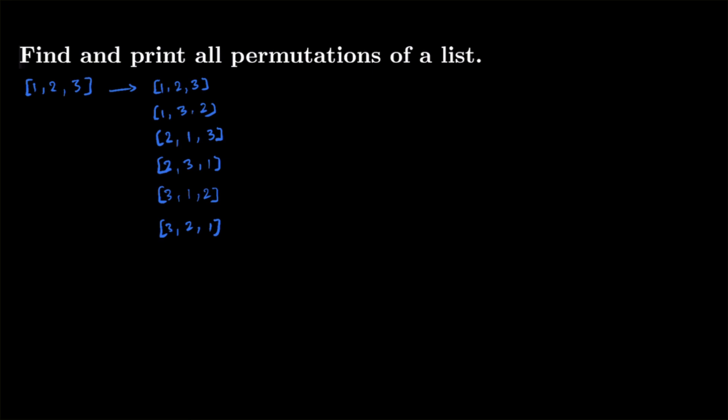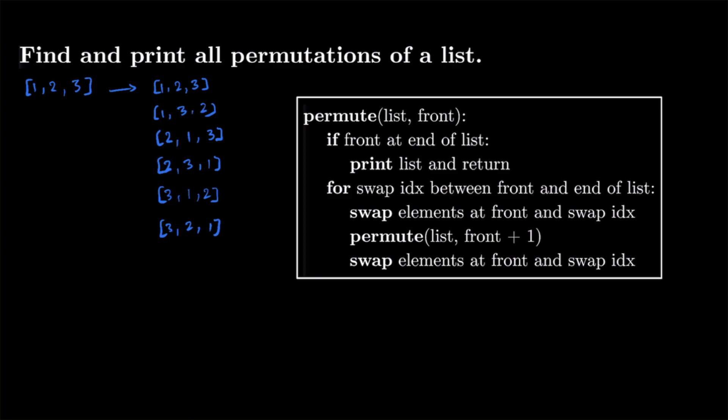This is actually a classic backtracking recursion problem. We can define a recursive function, perform a step, and then recurse again. After that recursion call, we backtrack — we undo the step we just did — and that makes sure we don't make any irreversible changes. Let's see how we're going to actually implement this. Here I've pasted the pseudocode that we're going to use.